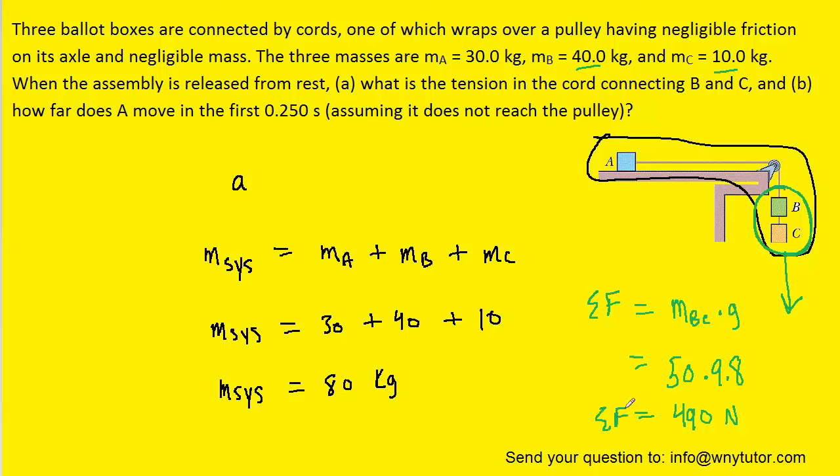Now, with the net force of the system, as well as the mass of the system, we can easily calculate the acceleration by dividing the net force by the mass. And when we plug in the known values, we see the acceleration is equal to 6.125 meters per second squared.